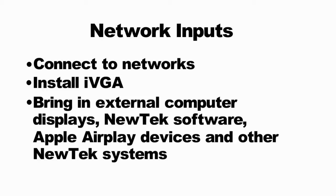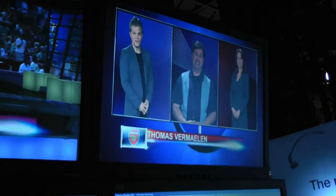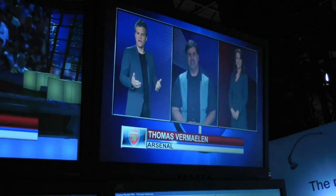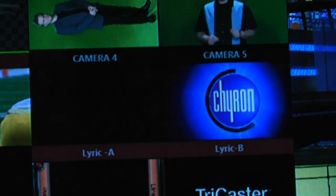In this video, we will cover setting up the TriCaster on networks, installing and running iVGA on client computers, using the network inputs for bringing in external computer displays, bringing in the output of NewTek software like LiveText, bringing in Apple AirPlay devices, and the output of other NewTek hardware like other TriCasters and 3Play systems. Network inputs can also be used with third-party products like Chiron IP to add 2D and 3D broadcast motion graphics to the TriCaster workflow.